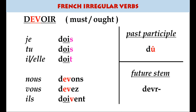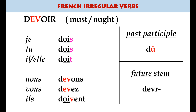Devoir means must, ought to, or has to. It has a slightly different form in the nous and vous: je dois, tu dois, il doit, then nous devons, vous devez, and back again to oi — ils doivent — but keeping the v. Notice the past participle has a circumflex: dû, as in j'ai dû faire quelque chose, I had to do something.